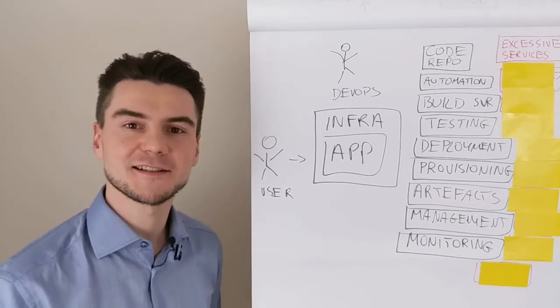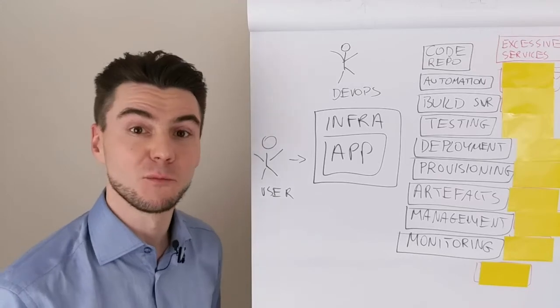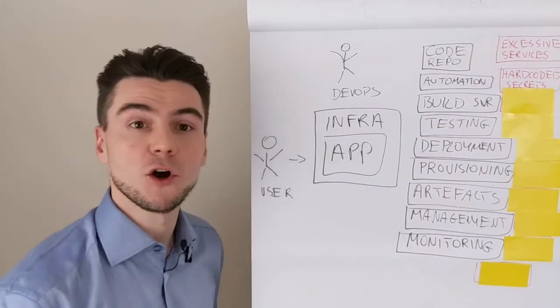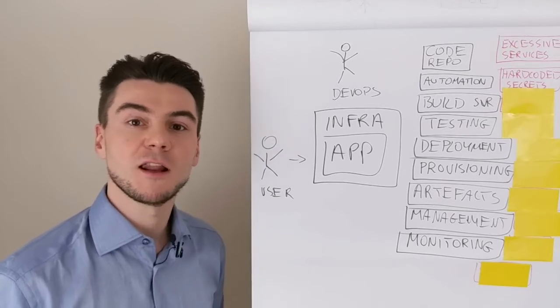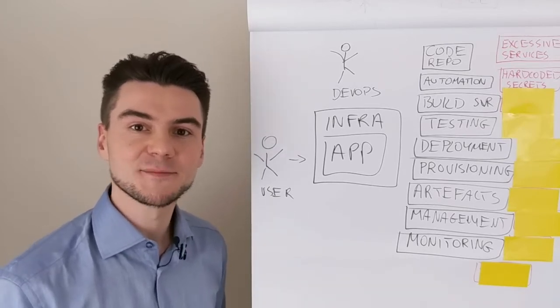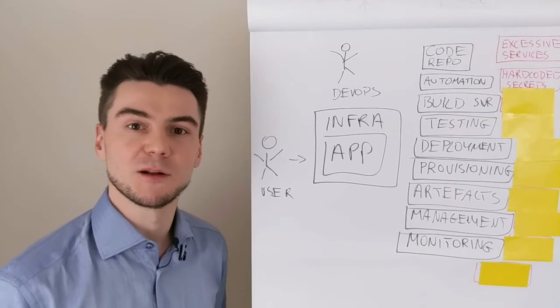Once the attacker has some working credentials, they can look for more. Secrets stored in code such as database credentials or service accounts will allow to extend the attack surface or even allow a quick lateral movement.